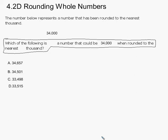And what I want you to do is read the question at least three to four times. Which of the following is a number that could be 34,000 when rounded to the nearest thousand? And when you see a question like this, I want you to go ahead and round all of your answer choices. Because they put stuff in there to try to confuse you.